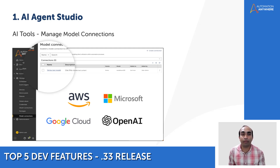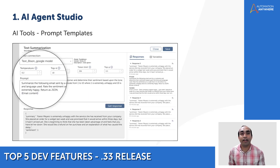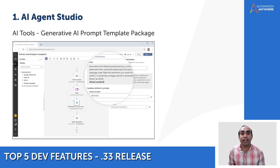The AI Agent Studio product suite consists of AI Tools and AI Governance. With AI Tools, you can experiment with various foundational models from top vendors such as Amazon Bedrock, Google Vertex AI, Azure OpenAI, and OpenAI, and identify the best fit for your needs. You can create reusable prompt templates with seamless integration all within the Automation 360 control room, and invoke these templates using the Generative AI Prompt Template package within your automations.